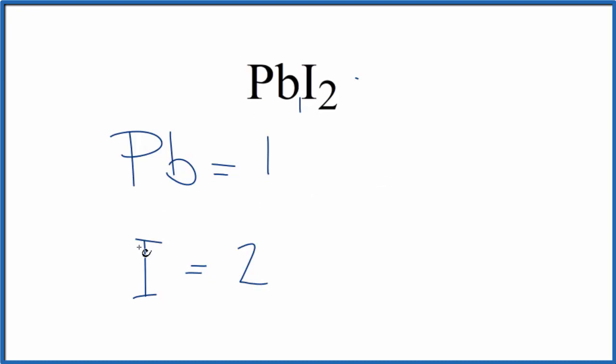We put 2 there. So we have a total of 3 atoms in PbI2, 1 lead and 2 iodine atoms.